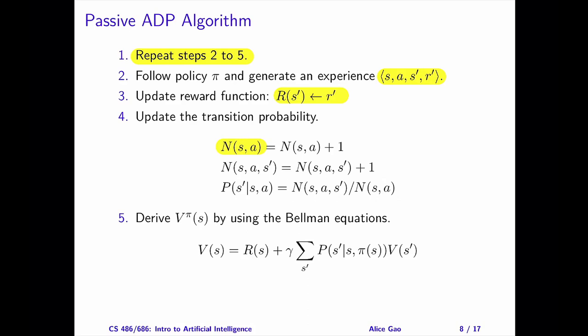N of S, A records the number of times the agent takes action A in state S. N of S, A, S prime records the number of times the agent takes action A in state S and lands in state S prime. The probability of S prime given S and A is equal to N of S, A, S prime divided by N of S, A. We will increment the two counts and calculate updated transition probability.